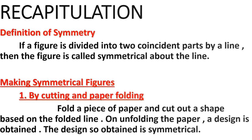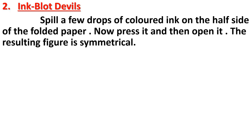The next method we covered is ink blot. Spill a few drops of colored ink on half of a folded paper, press it, and then open it. The resulting figure is symmetrical, and the line where you folded the paper is called the line of symmetry.